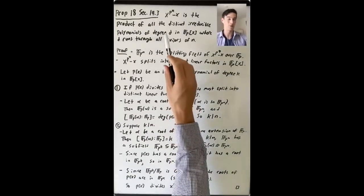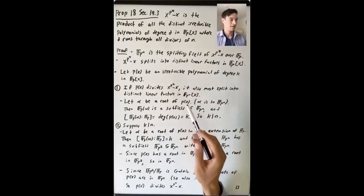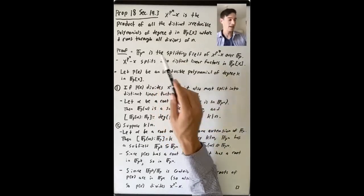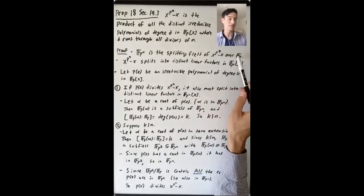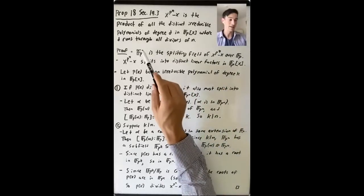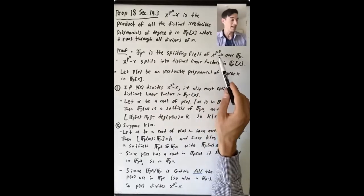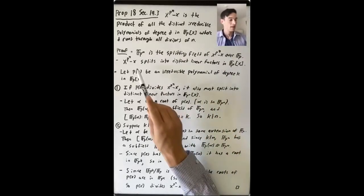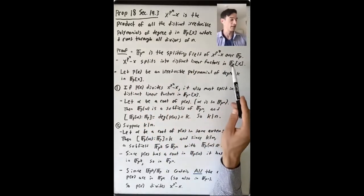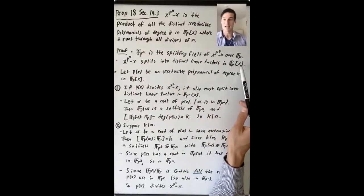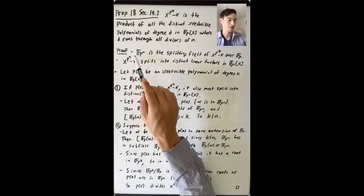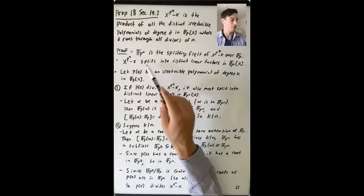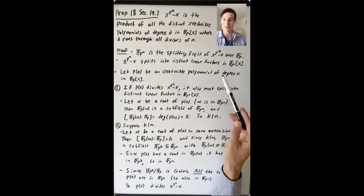We know that F_{p^n} is the splitting field of x to the p to the n minus x over F_p — this finite field of order p^n is the collection of roots of this polynomial. So x to the p to the n minus x splits completely into distinct linear factors in F_{p^n}[x].